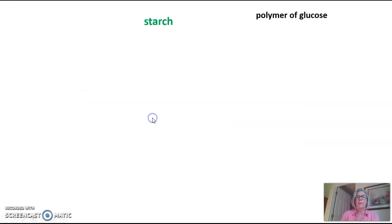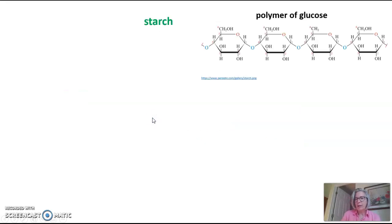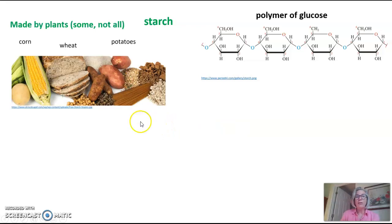So let's start with starch. Starch is a polymer of glucose like all of our polysaccharides we'll be talking about tonight, and as you can see here, all of these glucose units are linked together to form this polymer. Starch is made by plants, but not all plants, just some plants. So corn, wheat, and potatoes are classic examples of plants that make starch.